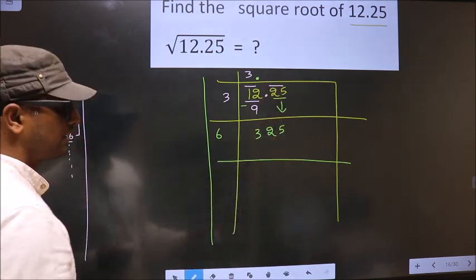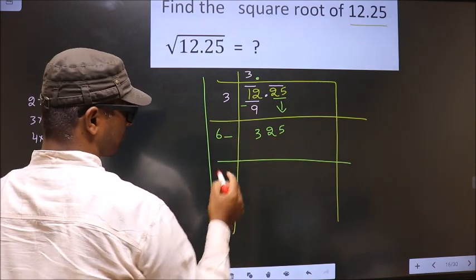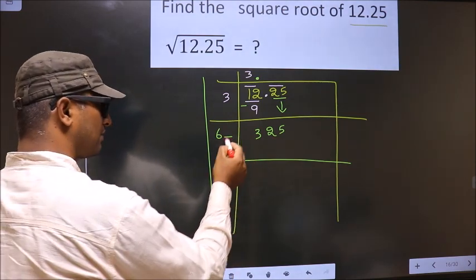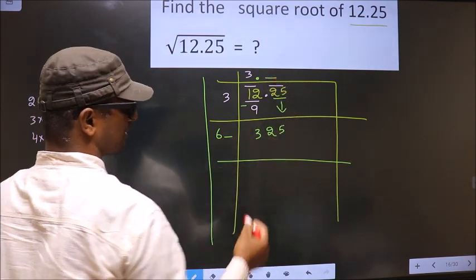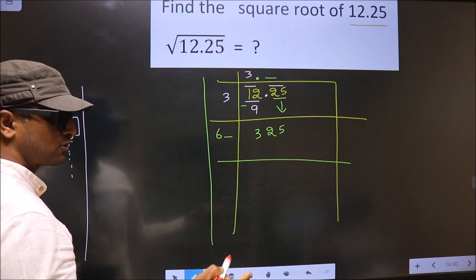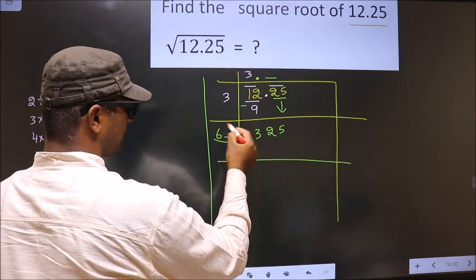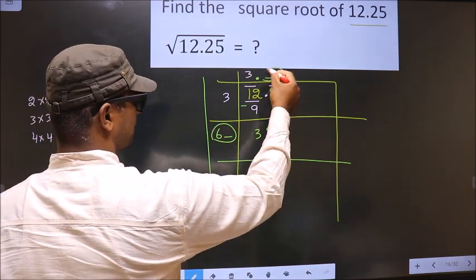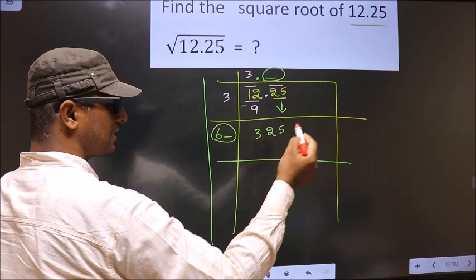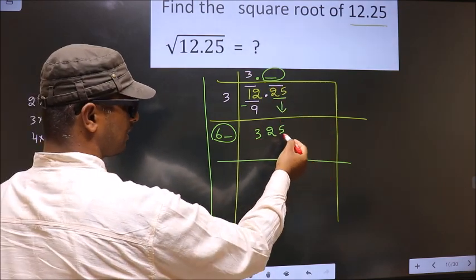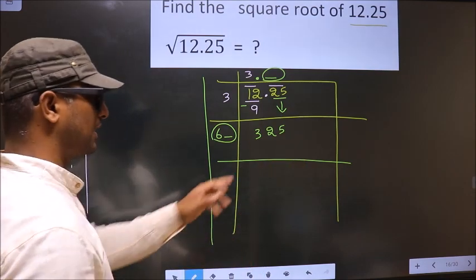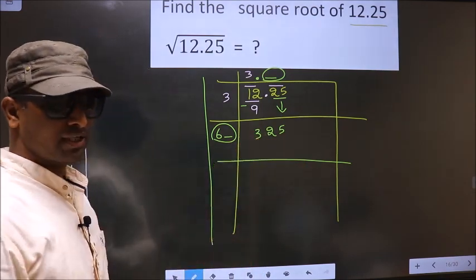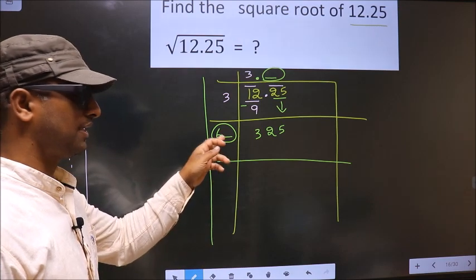Now I should write a number here. Condition is whatever number I write here, here also I should write the same number. And also when you multiply this number and this number, the resulting number should be either equal to this or smaller than this but should not be larger than this number. So let us find the number here.